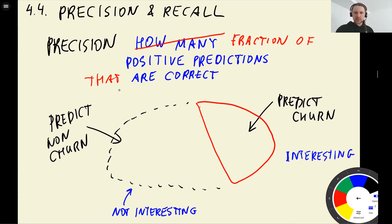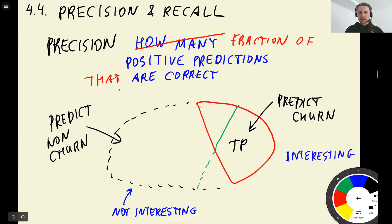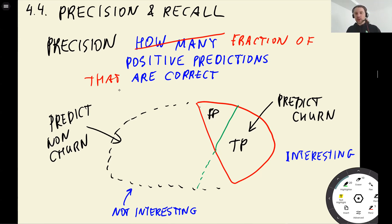Among those customers we predict as churning, some of them are actually churning — where y equals one. These are our true positive examples: we predict churning and they turn out to be churning. Then we have false positives: customers we think are churning but who are actually not churning. So precision tells us, among those we predicted as churning, what is the fraction of correct predictions.